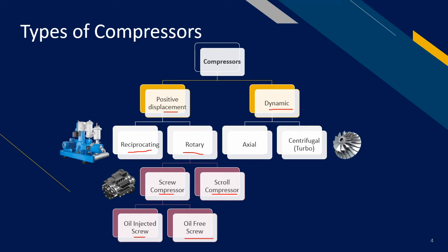Another type of compressor used in the industry are centrifugal compressors. These are good compressors generally used at plants which require a large volume of compressed air. From all the compressors shown here, the most commonly used compressors in the market are screw compressors, and we will learn more about them in the upcoming slides.